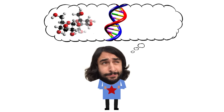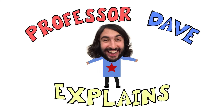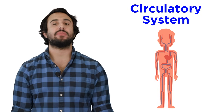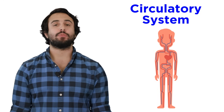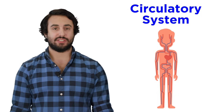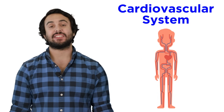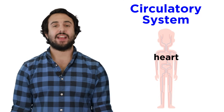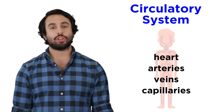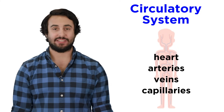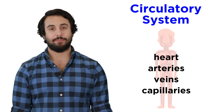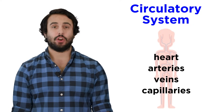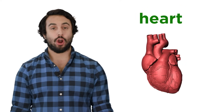It's Professor Dave, let's look at the heart. Now that we've learned about the composition and function of blood, it's time to learn about the system that circulates blood around the body, which is rather appropriately called the circulatory system, also known as the cardiovascular system. This is comprised of the heart and an incredible number of arteries and veins and capillaries that carry blood to every extremity of your body. There is a lot to discuss here, so let's start by taking a close look at the heart.